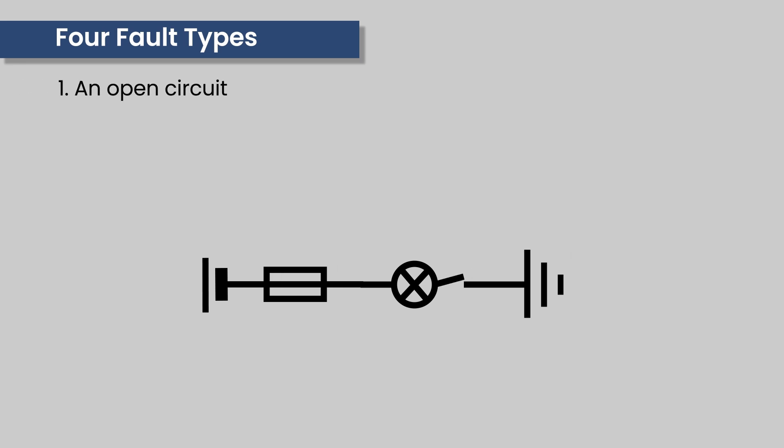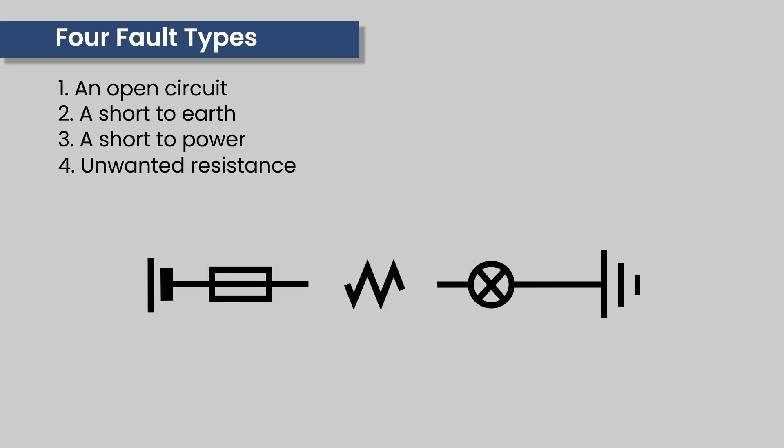There are four main types of faults: an open circuit where there is a break in the wiring or a faulty connection; a short to earth, where a wire or connection touches the car's earth circuit causing an increase in current which in turn causes the fuses to melt; short to power, where a connector or wire comes into contact with a power source and will cause the circuit to work unintentionally or not at all; unwanted resistance which will cause voltage drops and therefore reduce current in the circuit - components will underperform if at all.